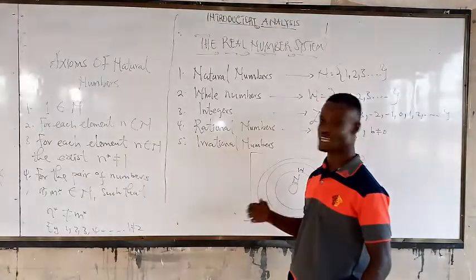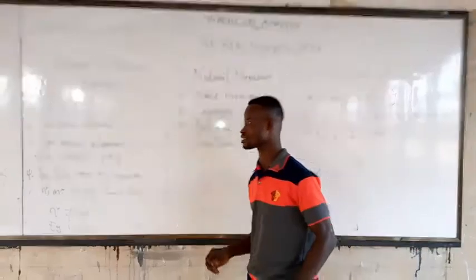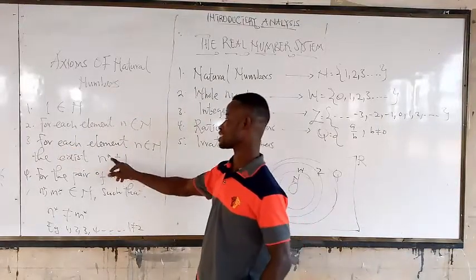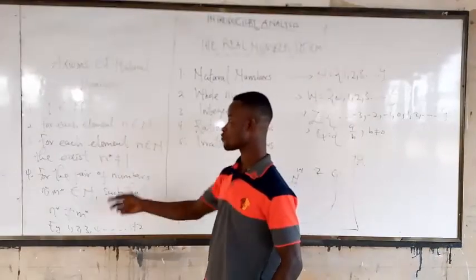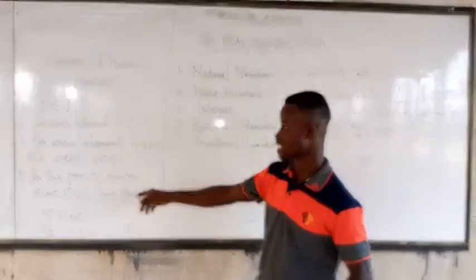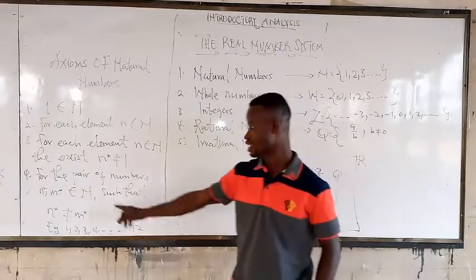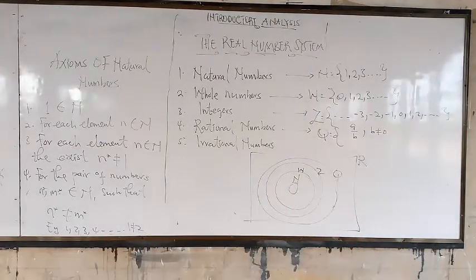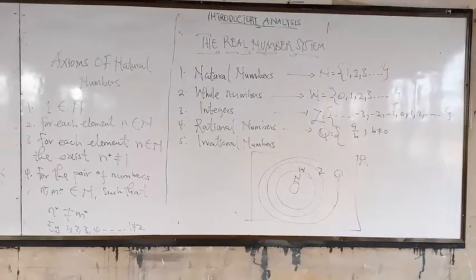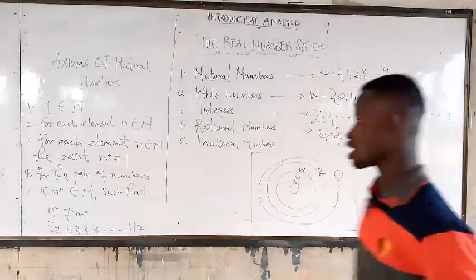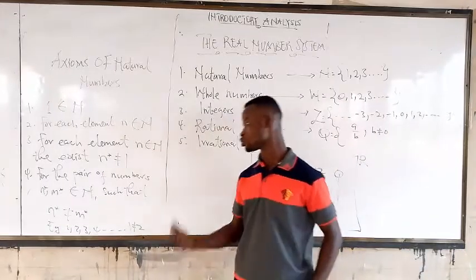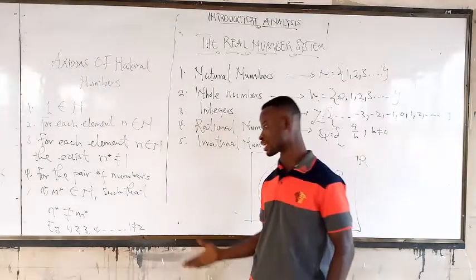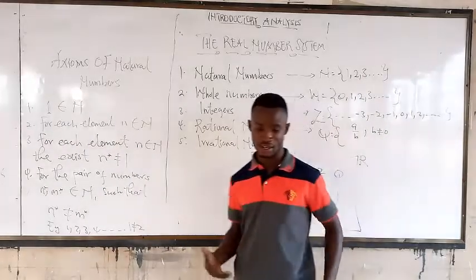From your geometry, you know what axioms and proofs mean. A proof is there to prove something, while an axiom is just a statement. For each element n belonging to the natural numbers, there exists a successor, and this successor cannot be equal to 1. For any pair of numbers belonging to the natural numbers, distinct numbers like 1, 2, 3, 4, 5 — you know that 1 cannot equal 2, 2 cannot equal 3, and 3 cannot equal 4.